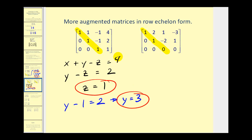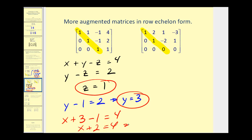Going back to the first equation with y and z now known: x plus 3 minus 1 must equal 4, giving x plus 2 equals 4, so x equals 2. Once a matrix is in row echelon form, it is much easier to solve the system through back substitution.